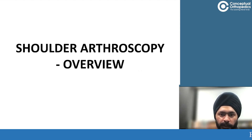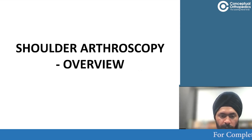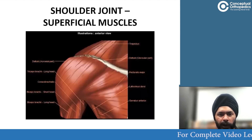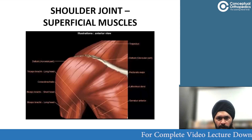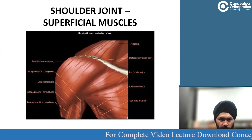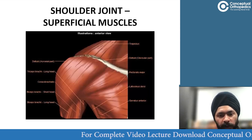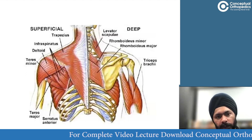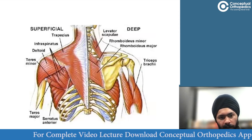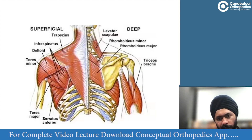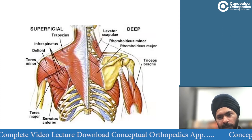Shoulder arthroscopy has been with us for more than three decades now. You all know about anatomy — the most important superficial muscle is your deltoid. The deeper muscles consist of the rotator cuff, the trapezius, and the scapular group of muscles.